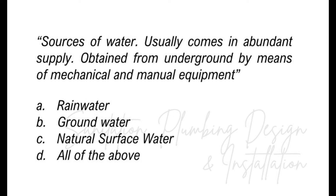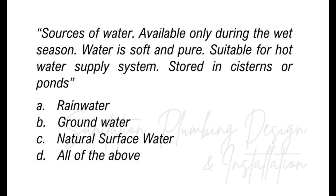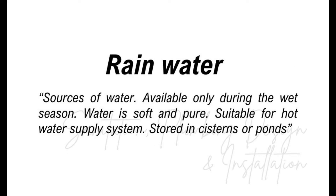Sources of water — it usually comes in abundant supply and is obtained from underground by means of mechanical and manual equipment — A, rainwater; B, groundwater; C, natural surface water; D, all of the above? The answer is groundwater. Sources of water — it is available only during the wet season. The water is soft and pure, suitable for hot water supply systems, and is stored in cisterns or ponds — A, rainwater; B, groundwater; C, natural surface water; D, all of the above? The answer is rainwater.